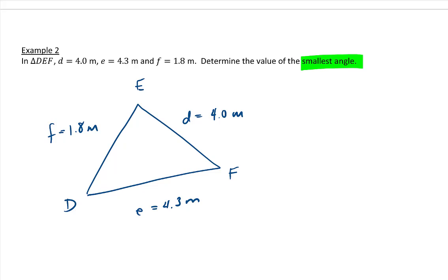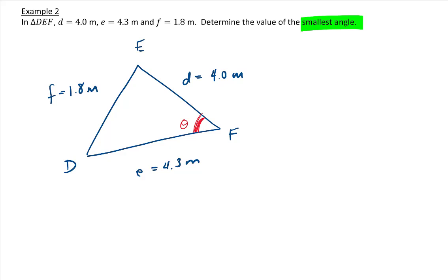So instead of trying to guess which is the smallest angle, you should note that since side f is the smallest side, then across side f will be the smallest angle. So that would be this angle here, angle F. That will be the smallest angle. So again, across the smallest side is the smallest angle. Across the largest side would be the largest angle. So we need to decide what version of the cosine law we need.